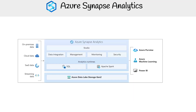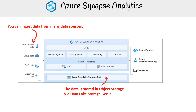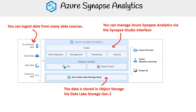Taking a look at this image, it shows a simple process of Azure Synapse Analytics. You can ingest data from many data sources, such as on-premises data, cloud data, SaaS data, or streaming data. The data is stored in object storage via Data Lake Storage Gen2. You can manage Azure Synapse Analytics via the Synapse Studio interface. You can output the data to various Azure services such as Azure Purview, Azure ML, or Power BI.